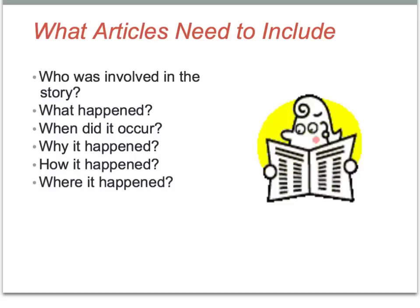What articles need to include: who was involved in the story, what happened, when did it occur, why it happened, how it happened, and where it happened. These are your five W's and how.